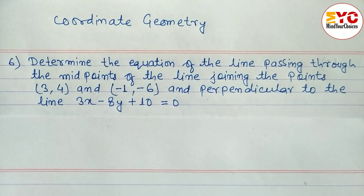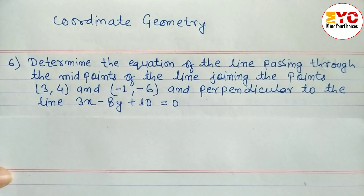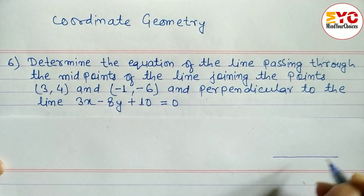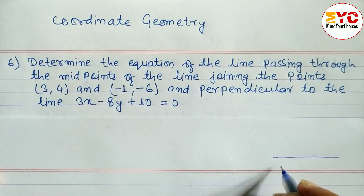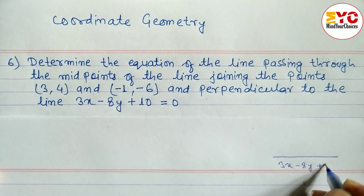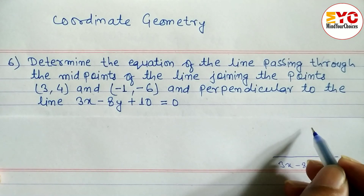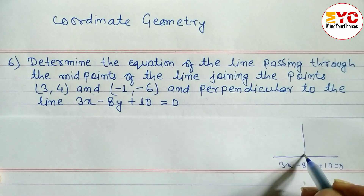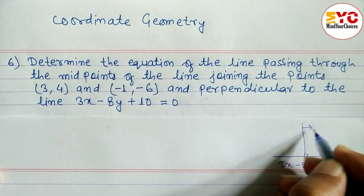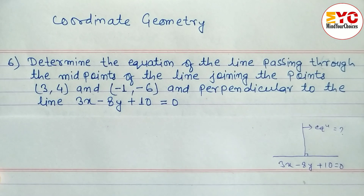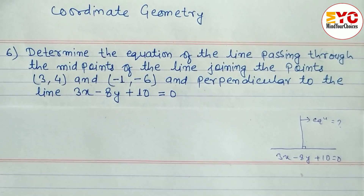Let's draw a diagram so you can understand more properly. First of all, we have to find the equation of the line which is perpendicular. The equation of the given line is 3x minus 8y plus 10 equals zero, and we need to find the equation of the line perpendicular to it.